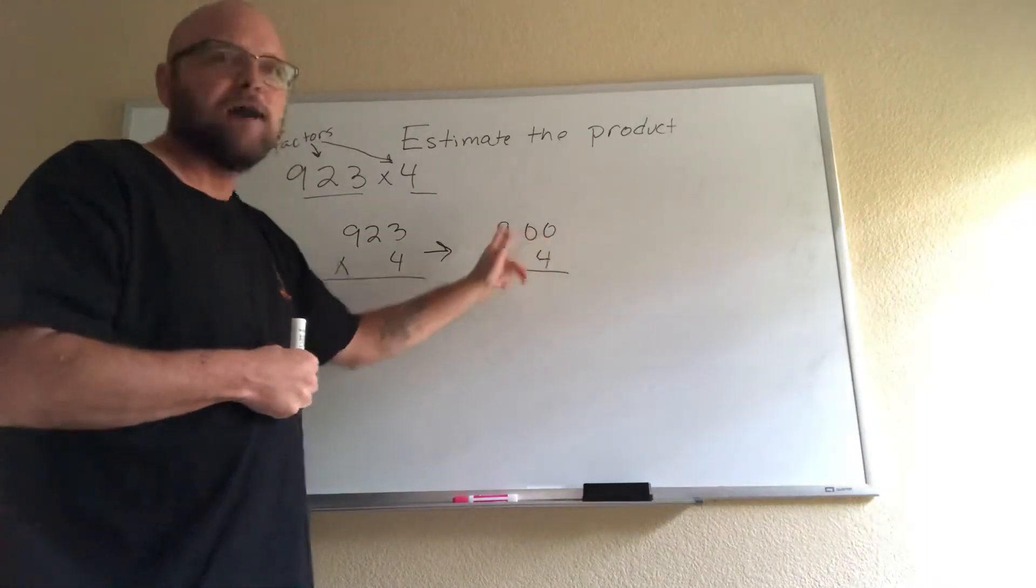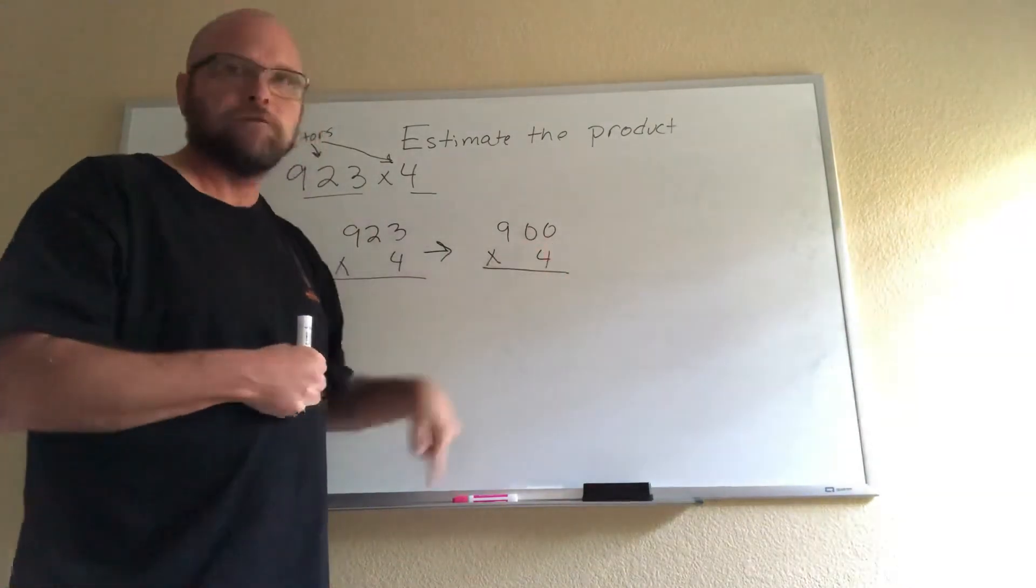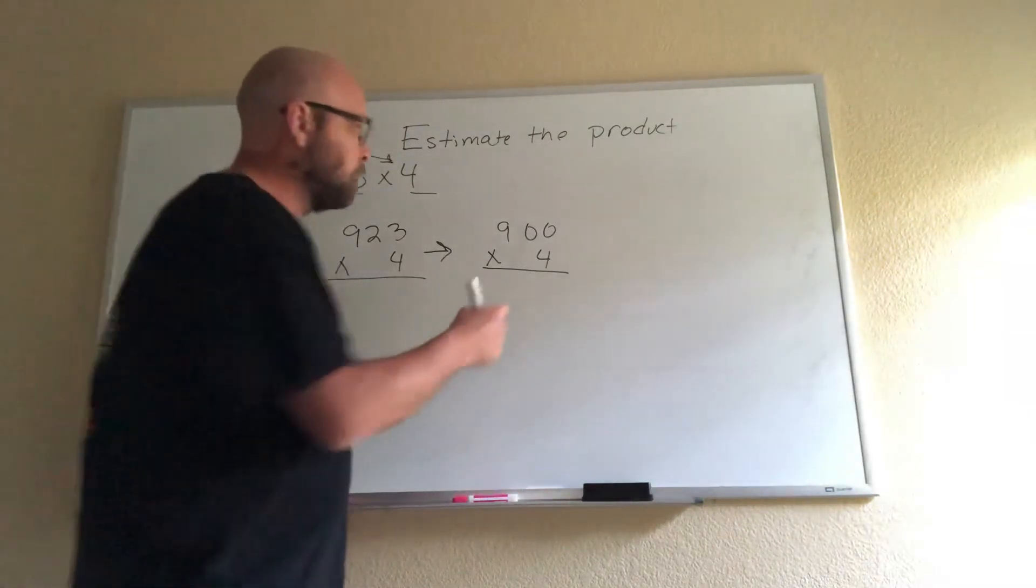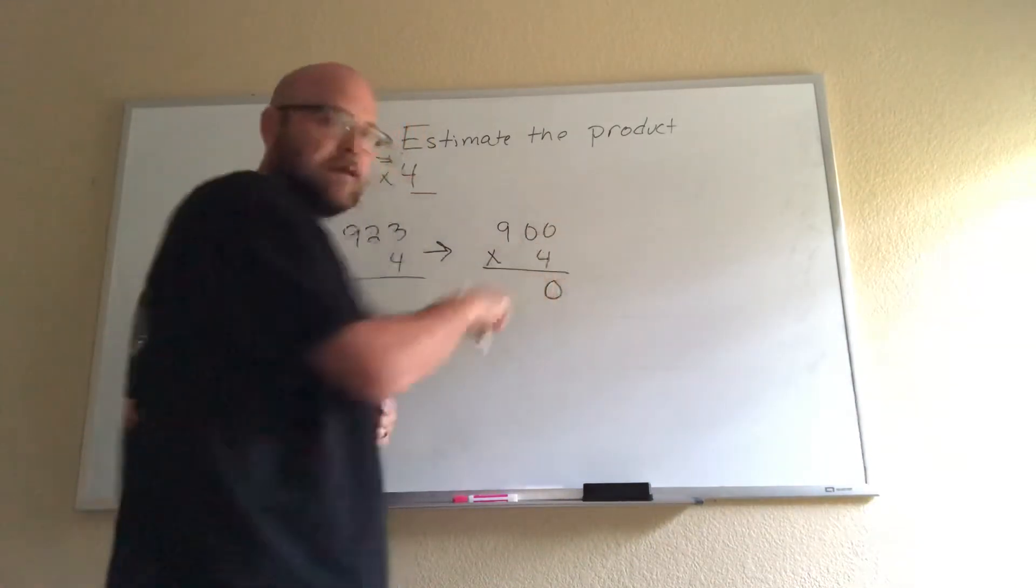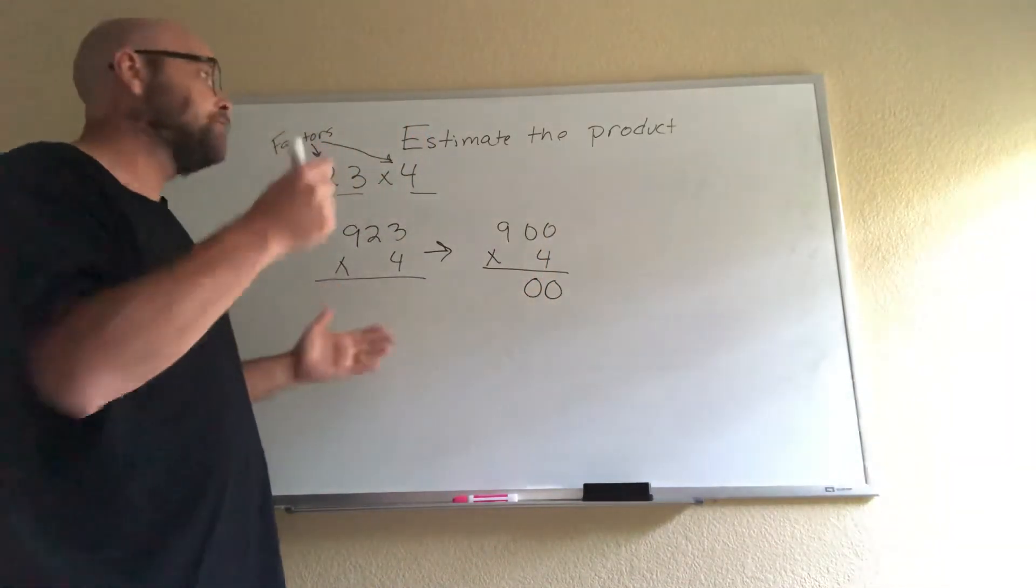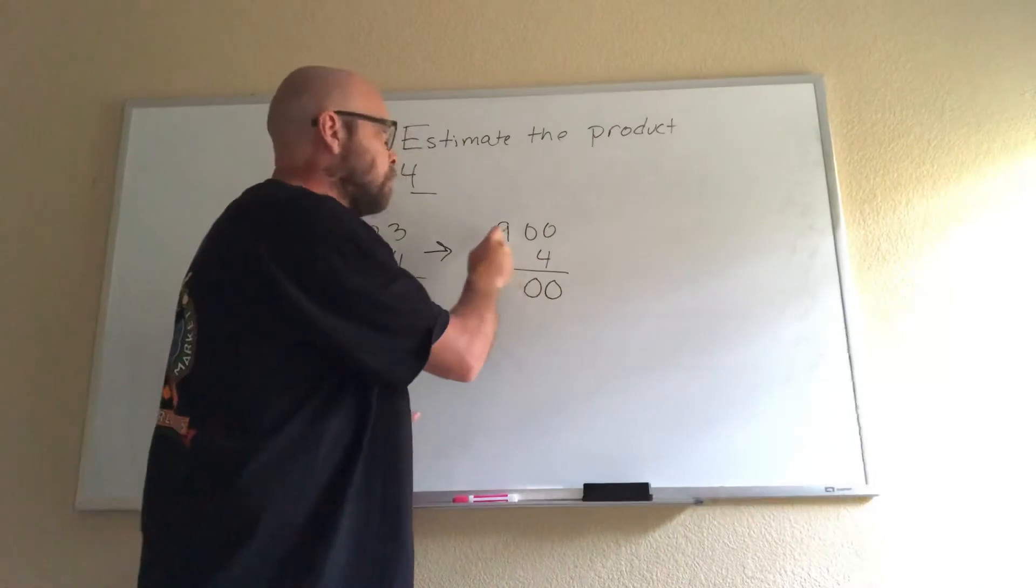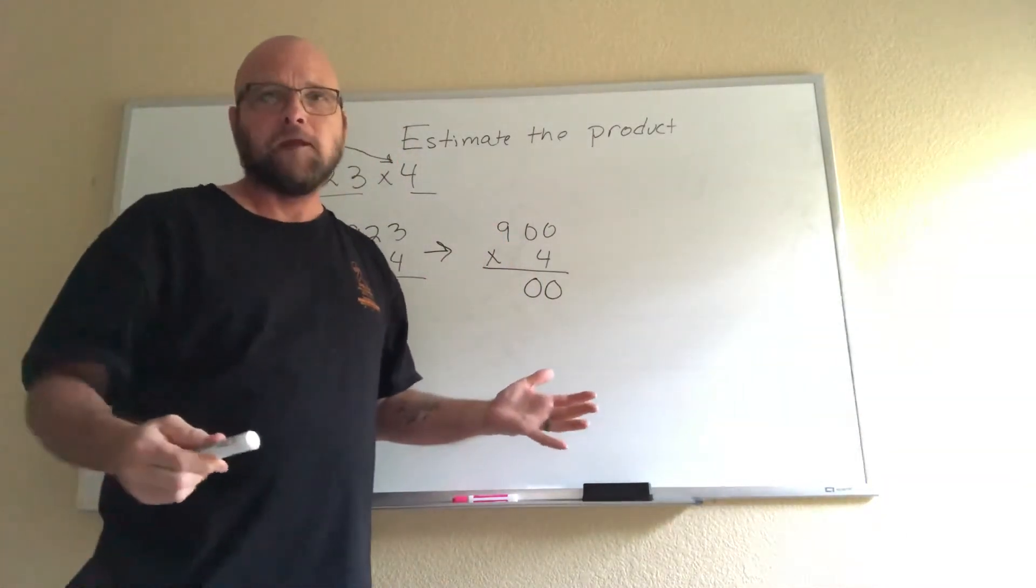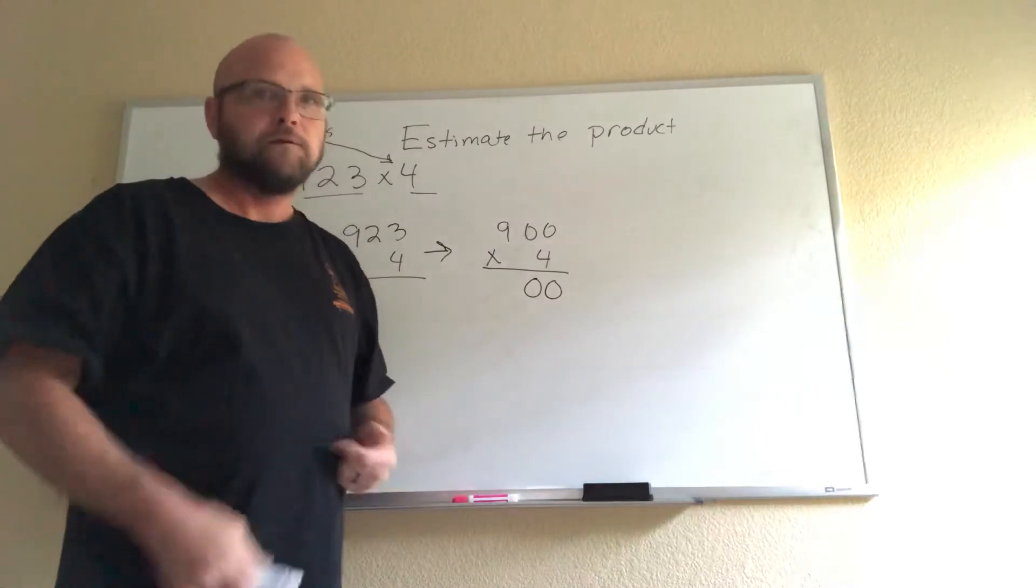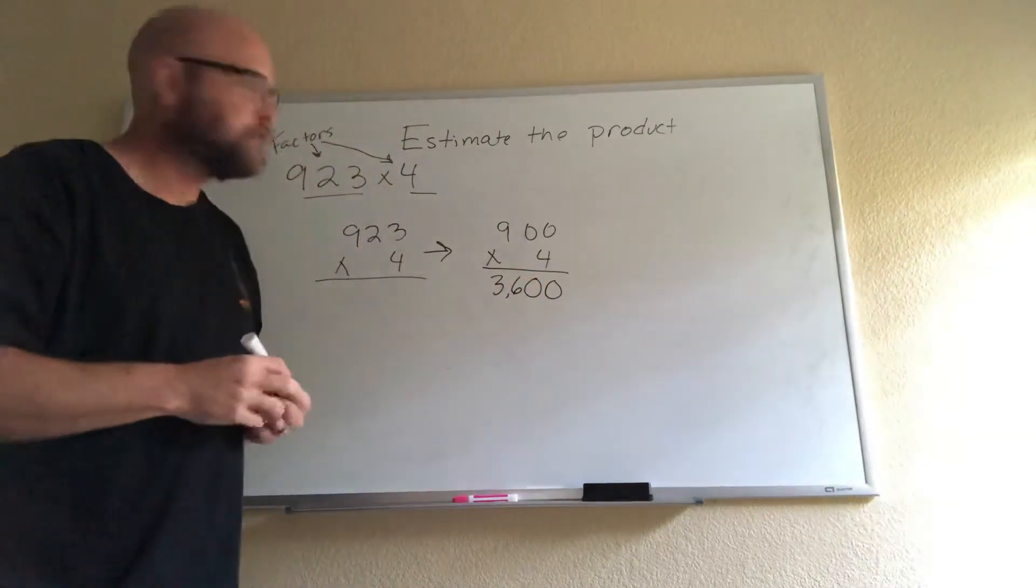So my estimate: if I have numbers that end in zero, or more than one zero, I can take those zeros and just put them down. Because if I'm doing the standard algorithm, 4 times 0 is going to give me 0. All I need to know is what 4 times 9 is. You have access to a multiplication chart, so nobody should ever miss that. 4 times 9 is 36, so my estimate is 3,600.